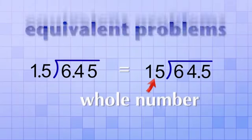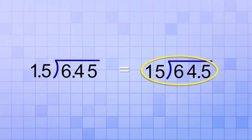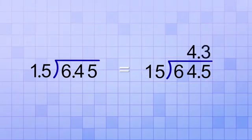That means if we solve 64.5 divided by 15, we get the answer 4.3, which is exactly the same answer we would get if we did 6.45 divided by 1.5.